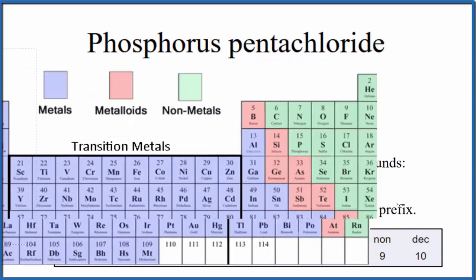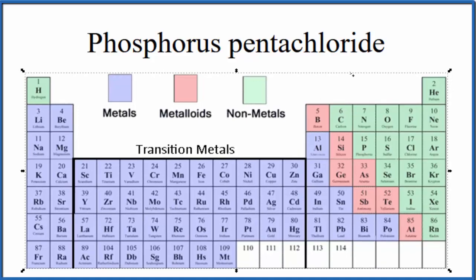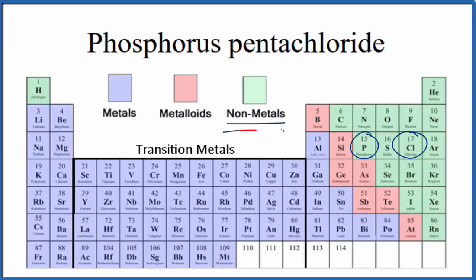If we look at the periodic table, broken up into metals, nonmetals, and metalloids, we can find phosphorus right here, and then we're looking for chloride, so that's chlorine, right here. Both of these are nonmetals.